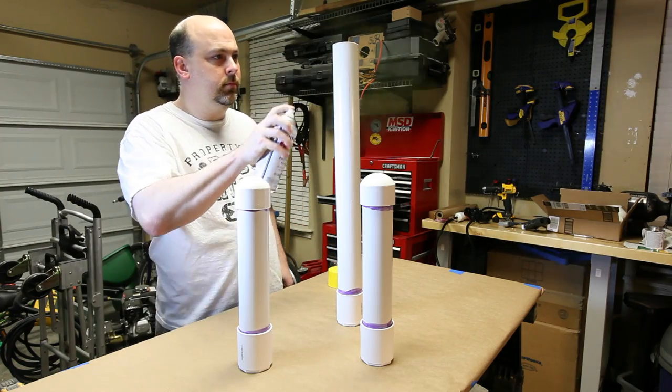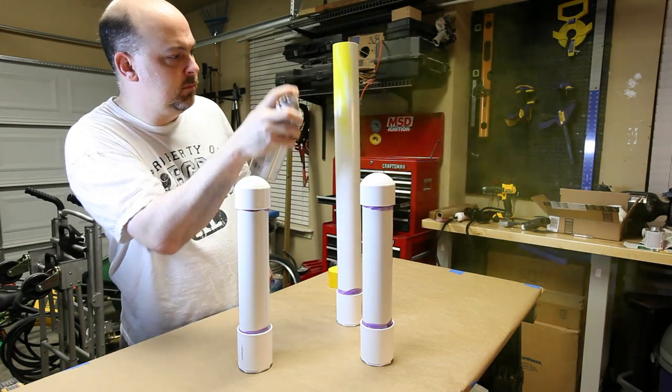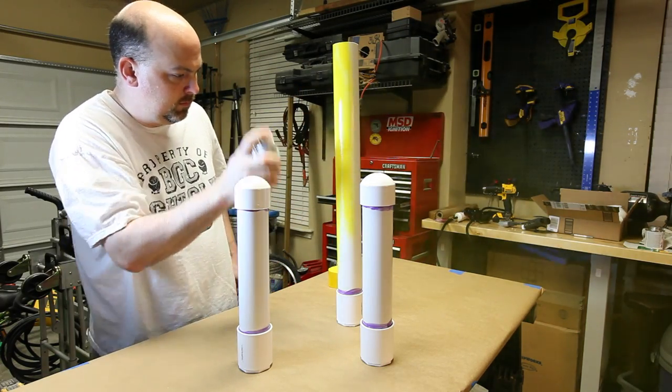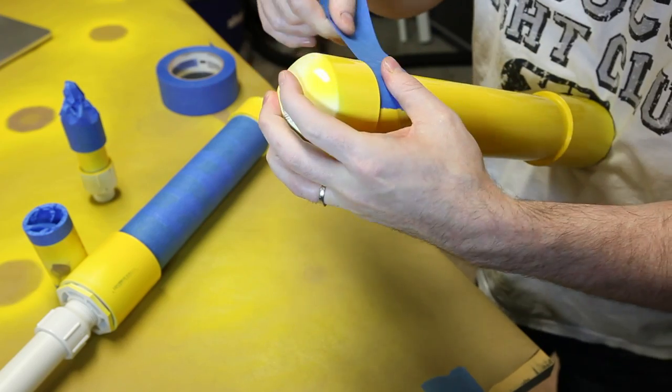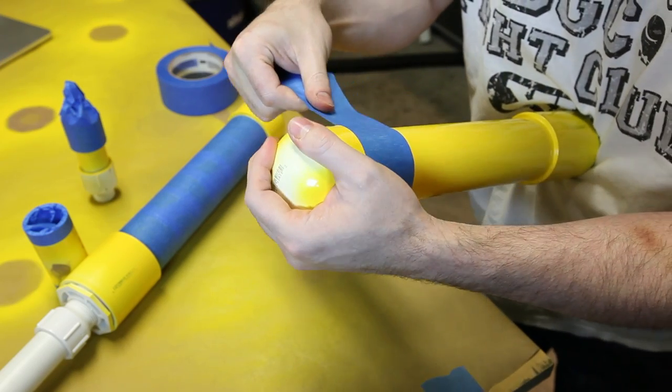I want my water balloon cannon to look awesome, so I decided to paint it yellow and black. First I painted the yellow and then taped it off carefully. Be sure to wait 24 hours for the paint to cure completely before applying the masking tape.